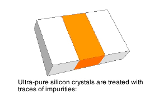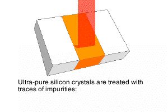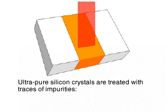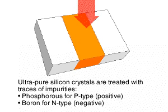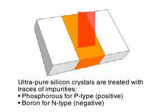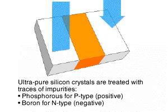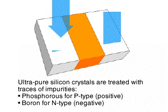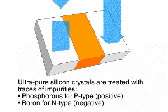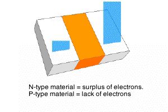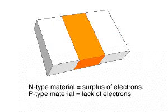The individual layers are formed by treating pure silicon with trace amounts of impurities. Adding boron will create N-type material, phosphorous P-type material. N-type material will have a surplus of electrons, whereas P-type material will have a lack.